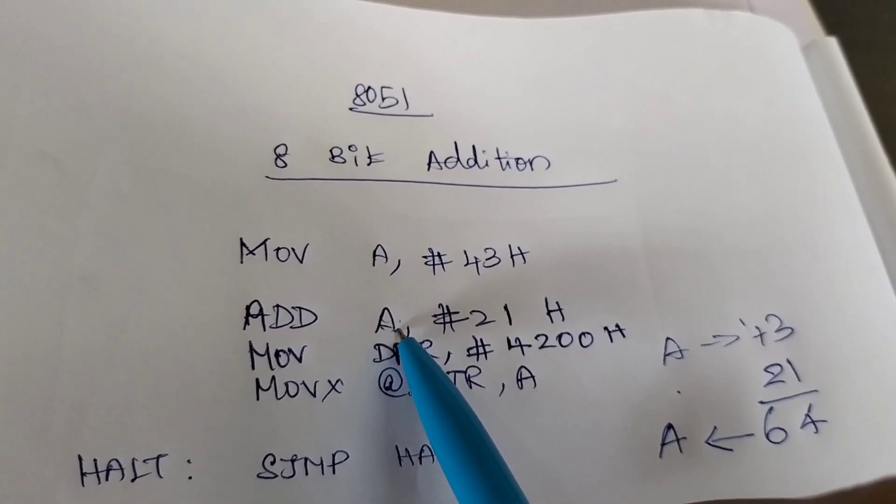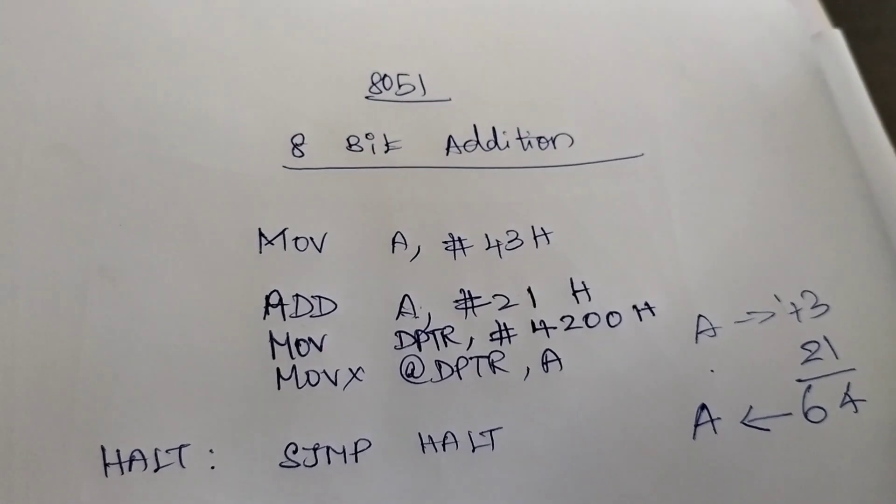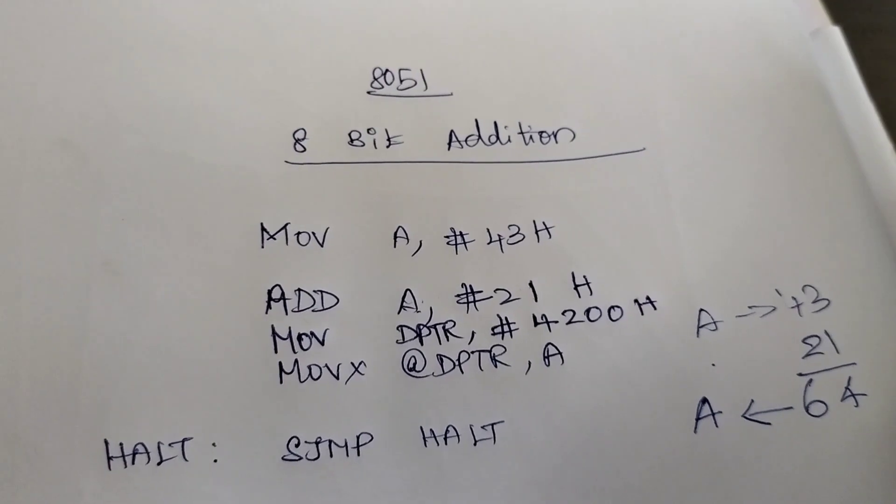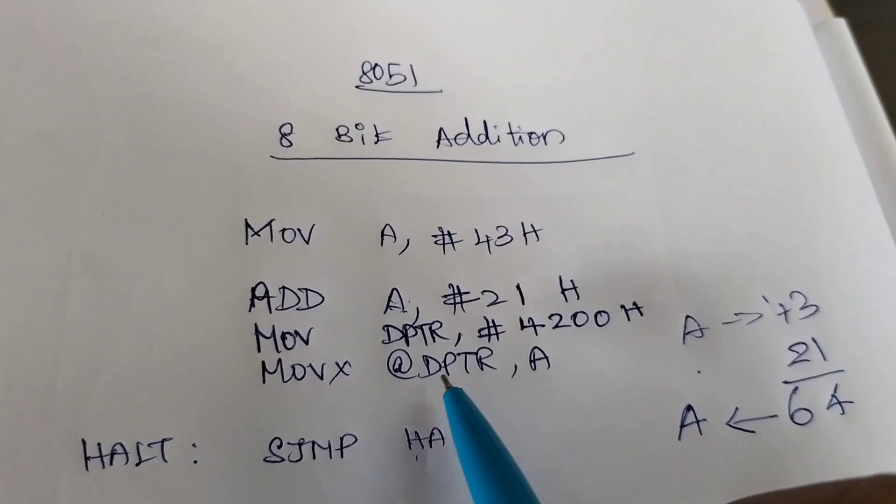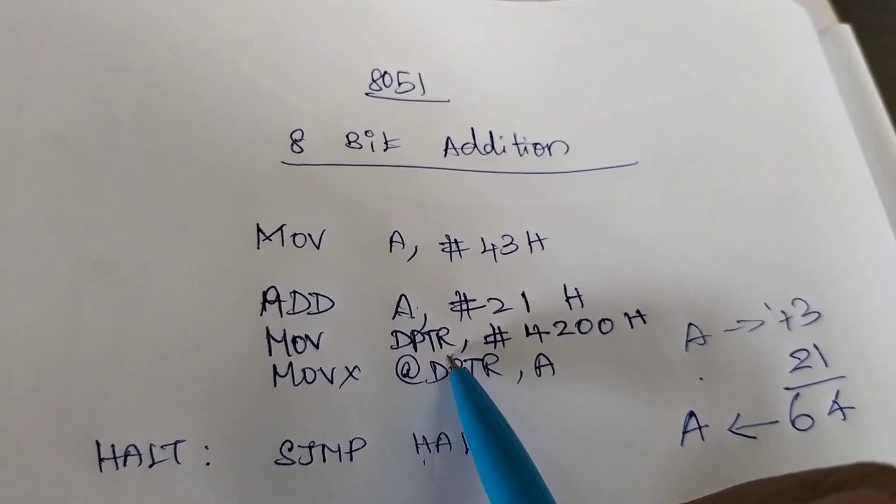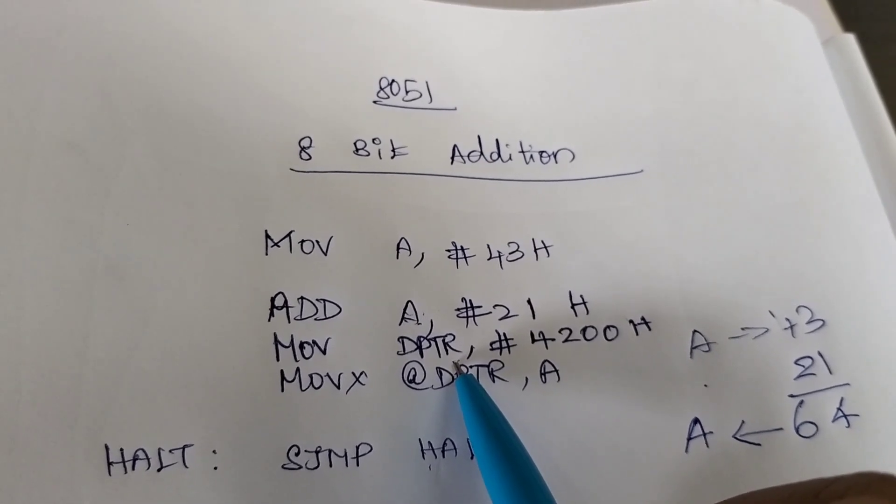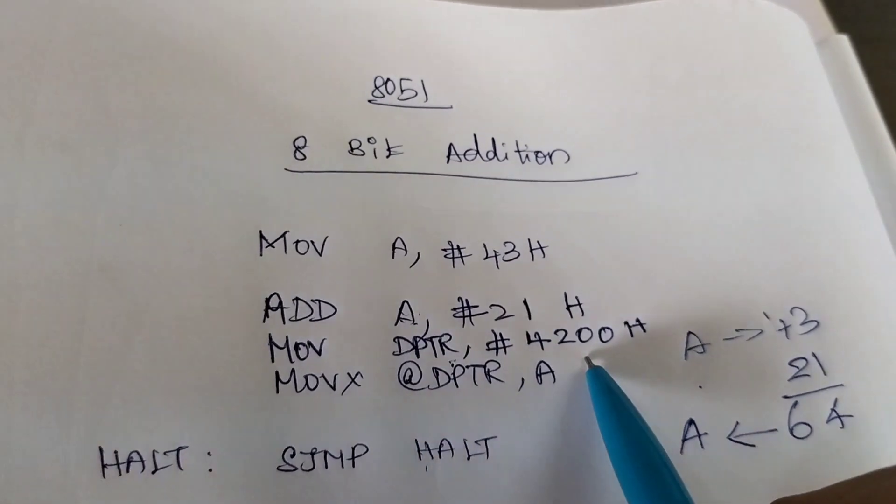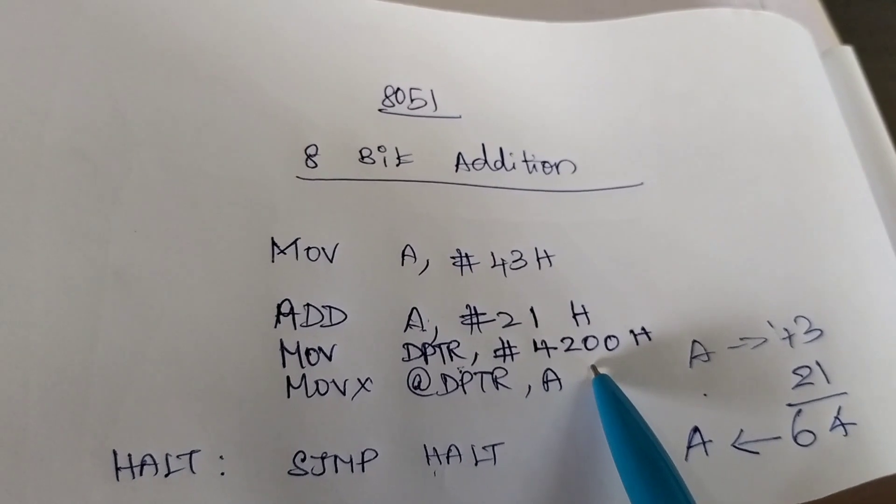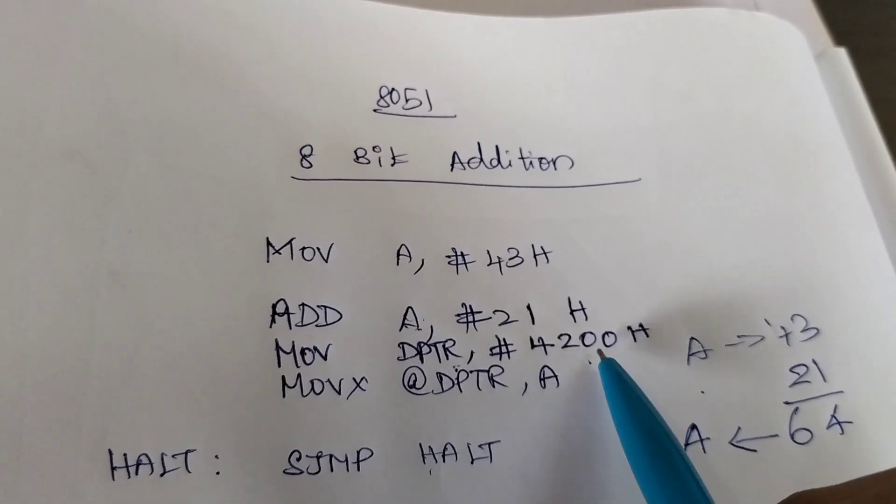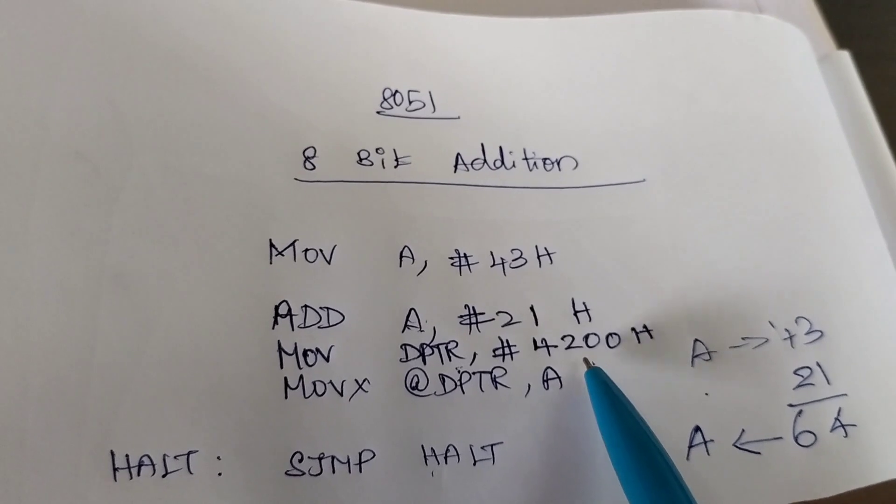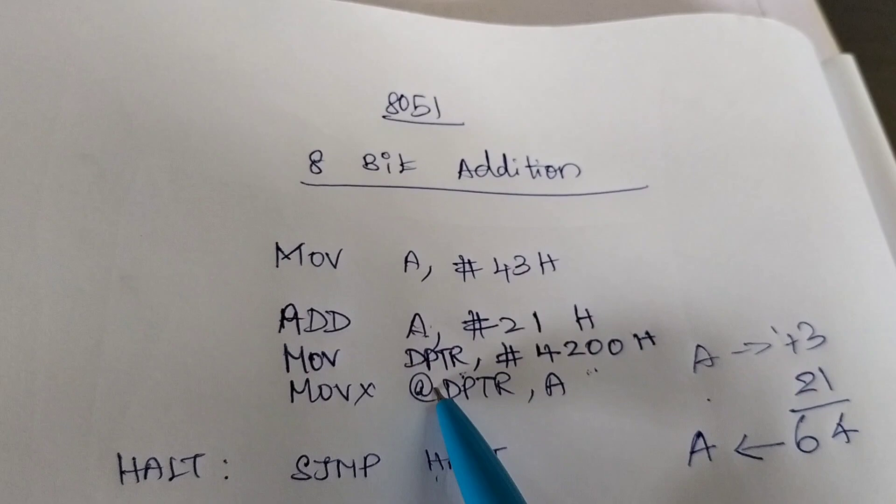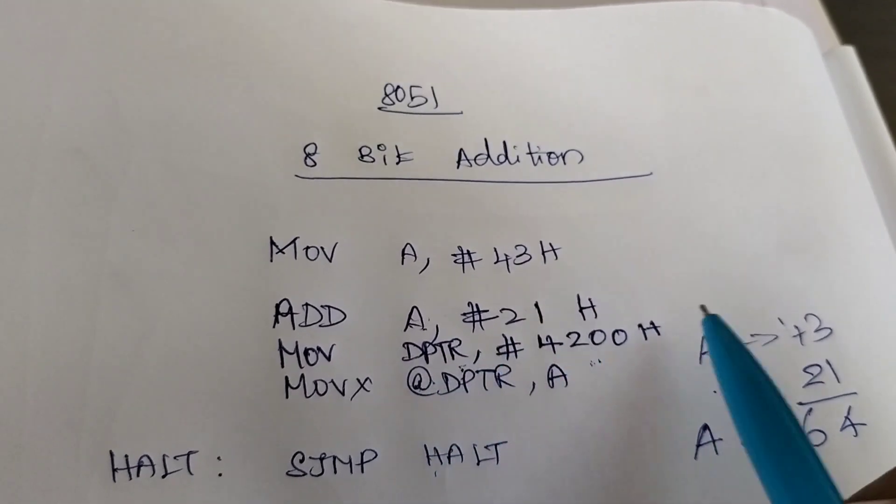Next, here since we are going to execute the program in the kit, we need to see the output in the memory location. So in order to point out the memory location, we require DPTR, that is the data pointer. The memory location address is 4200. So in order to use that address, first of all, we need to load that address value as immediate data in the DPTR.